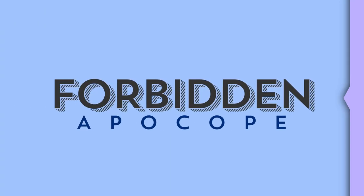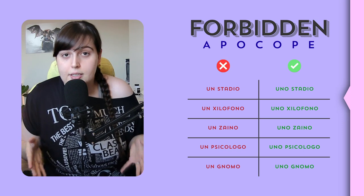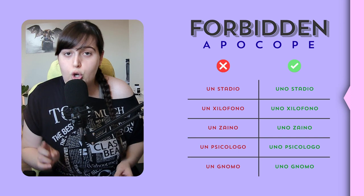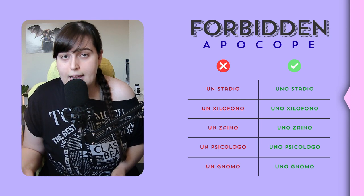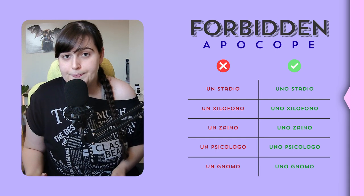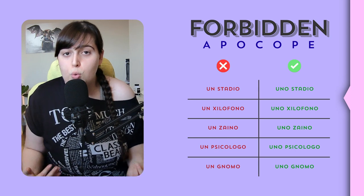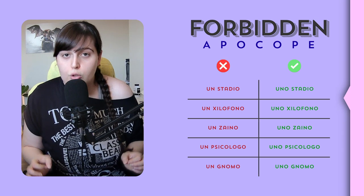On the other hand, apocope is forbidden in front of words that start with S followed by a consonant, X, Z, PS, or GN. So, for example, not 'un stadio' but 'uno stadio' (a stadium); not 'un xilofono' but 'uno xilofono' (a xylophone); not 'un zaino' but 'uno zaino' (a backpack); not 'un psicologo' but 'uno psicologo' (a psychologist); not 'un gnomo' but 'uno gnomo' (a gnome).